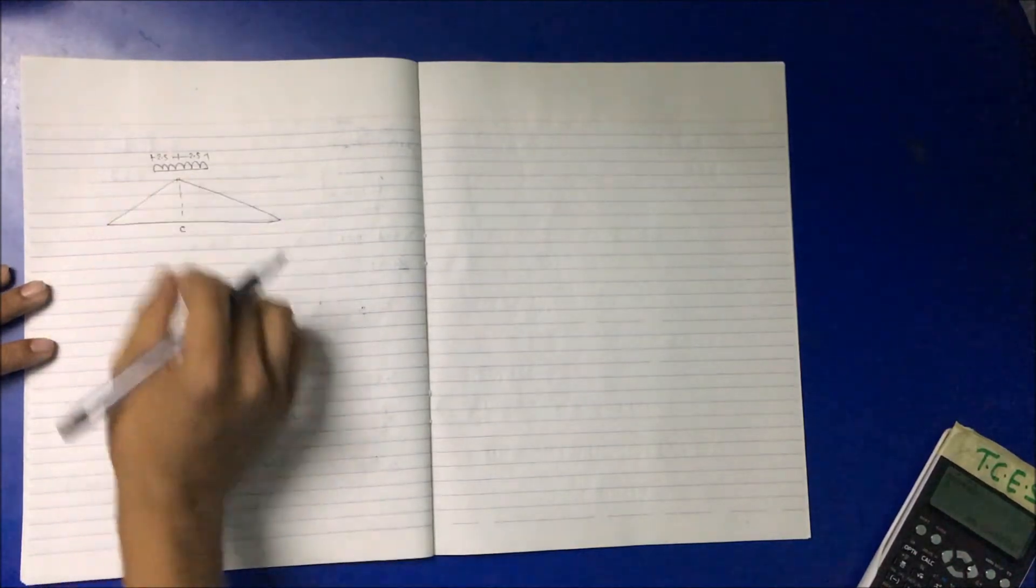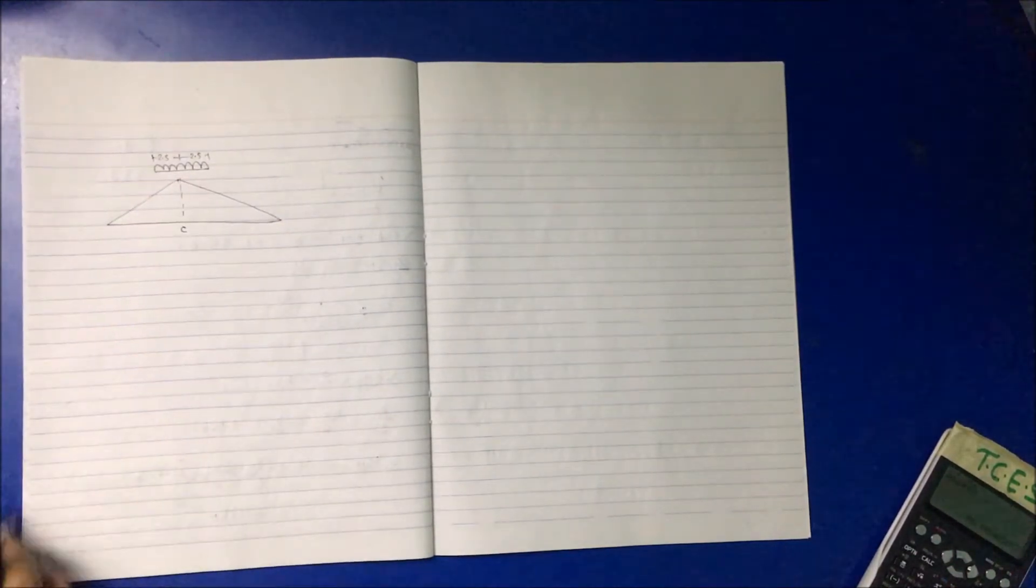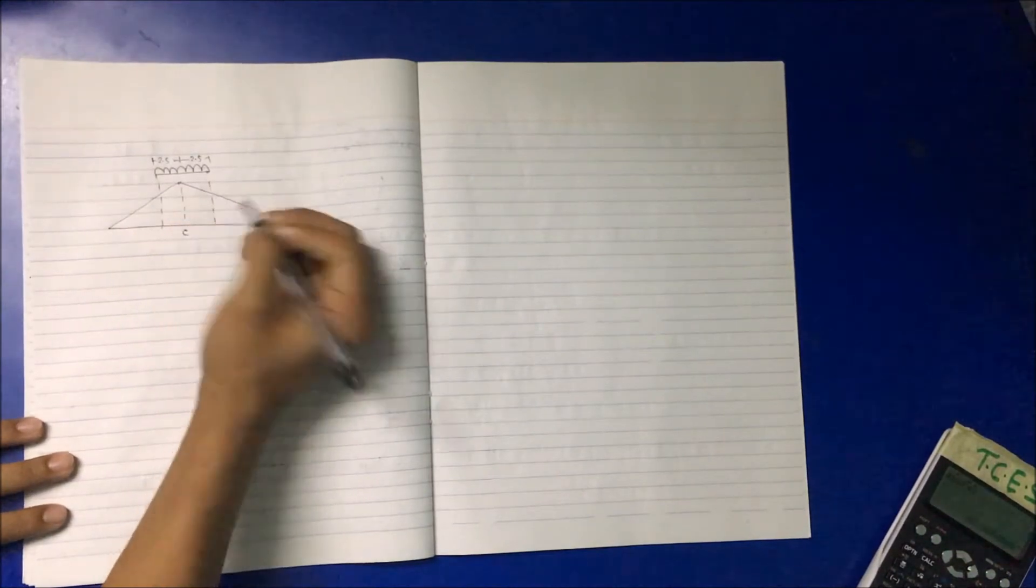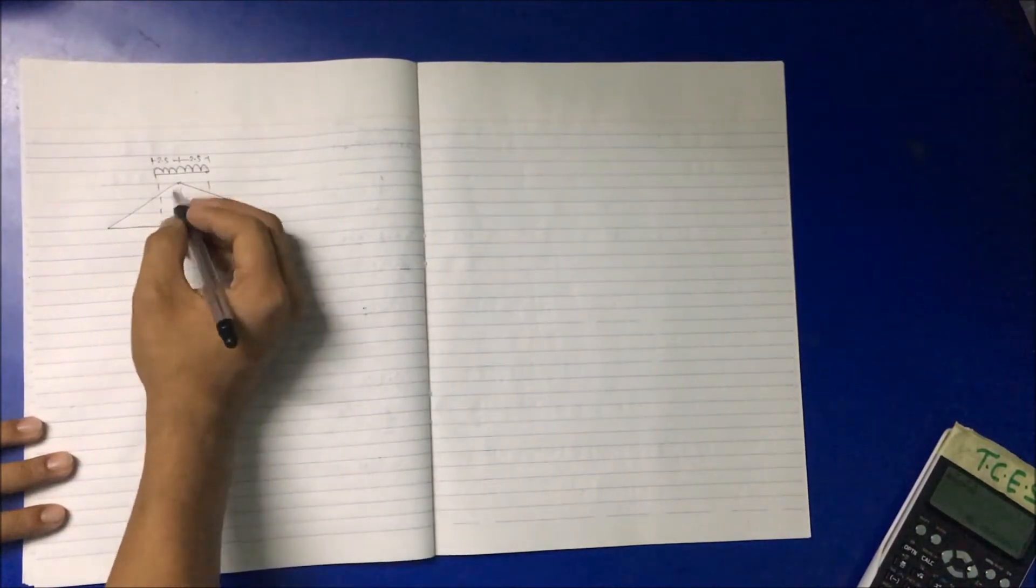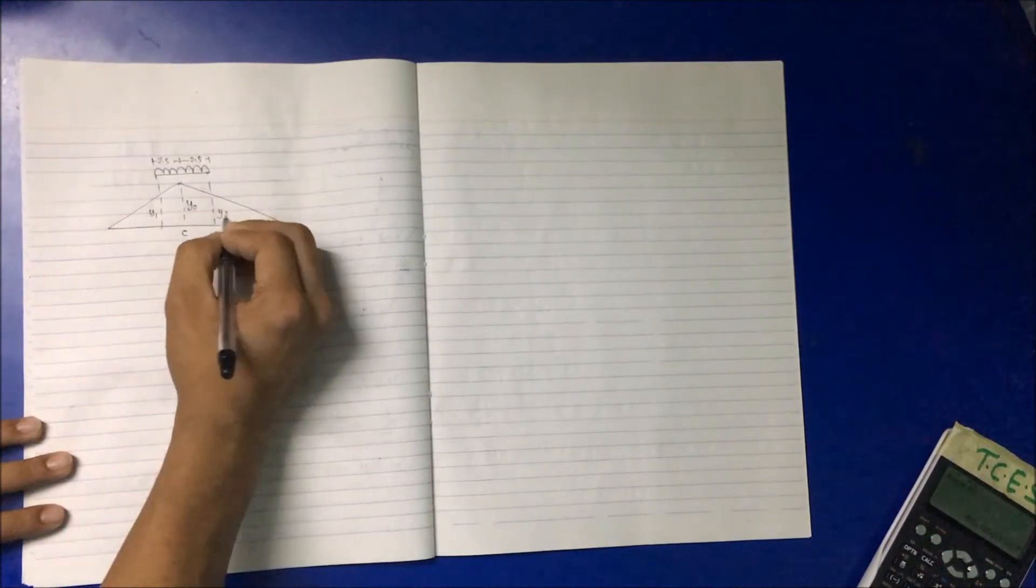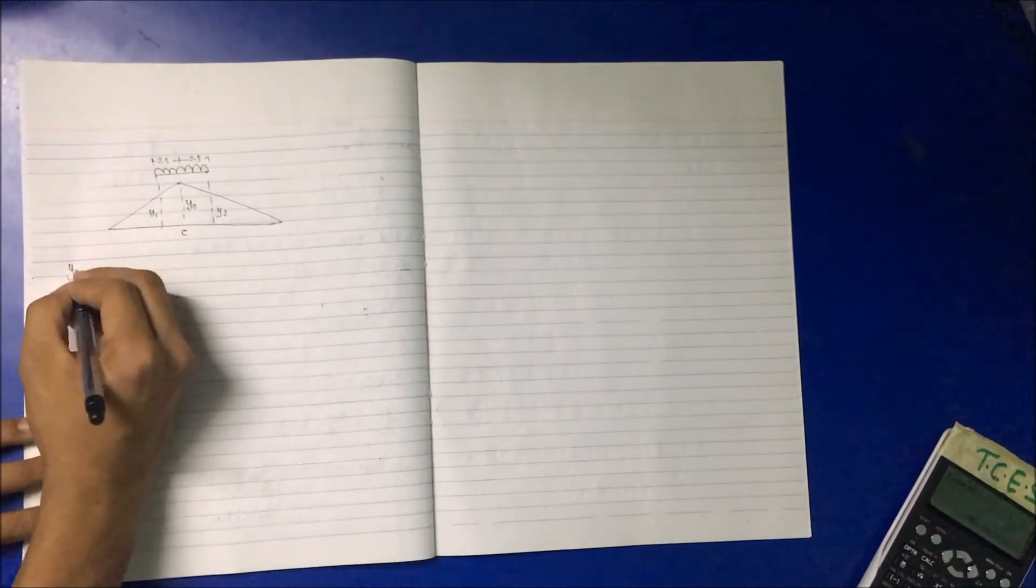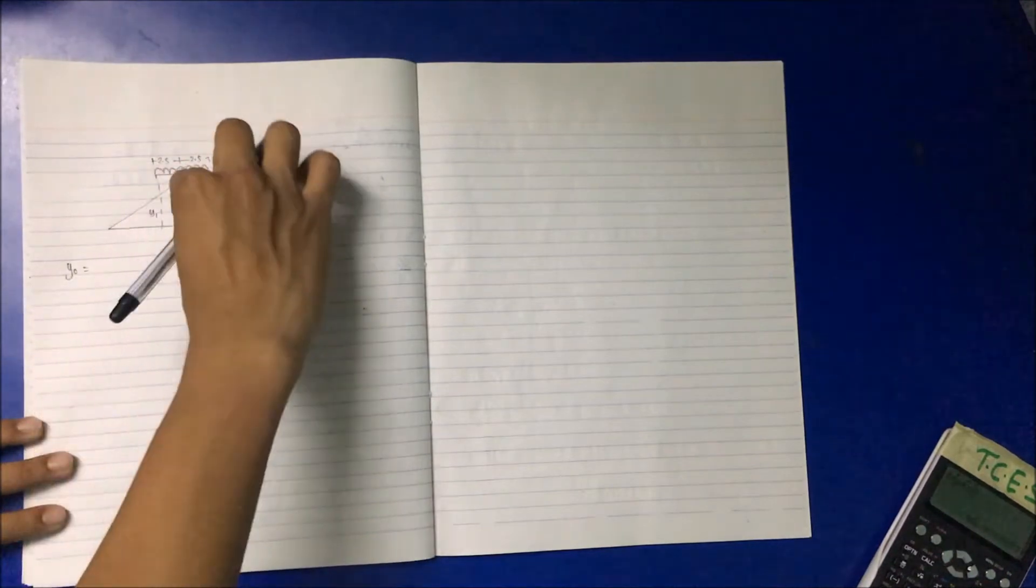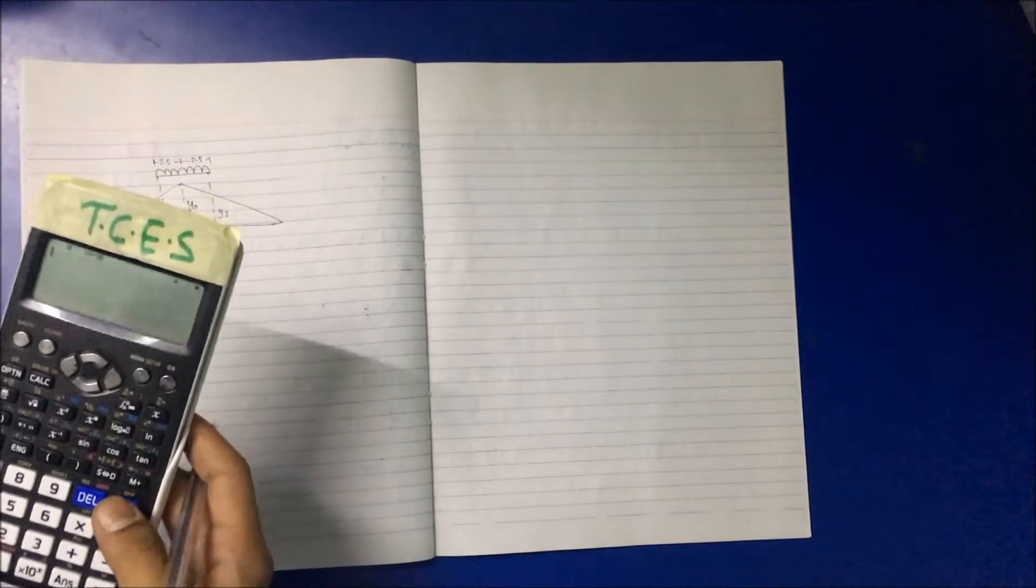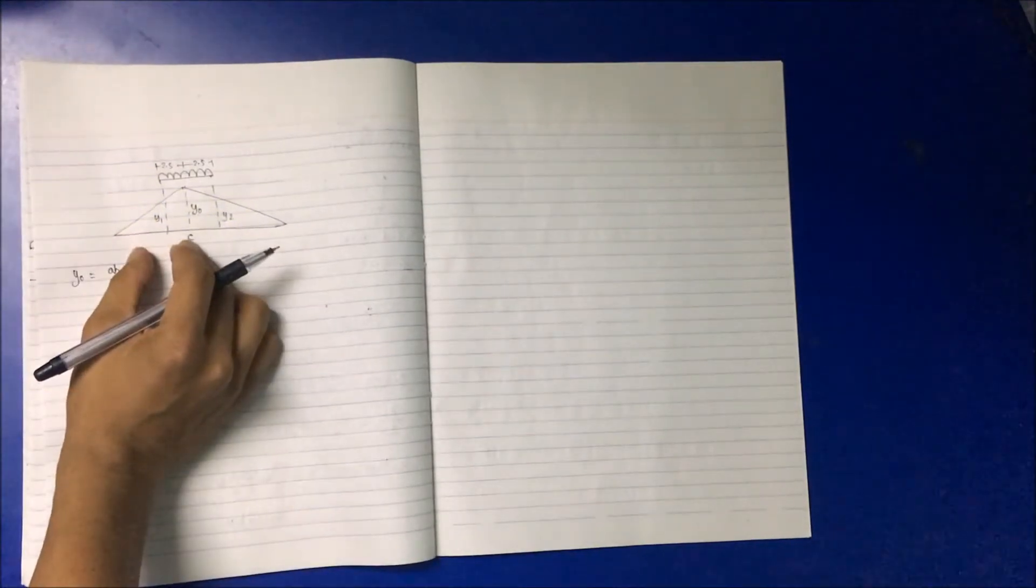Now we can calculate the area: y_naught, y1, and y2. y_naught is equal to AB by L where A is 6 and this being 9, so 6 into 9 divided by 15, this is 3.6.